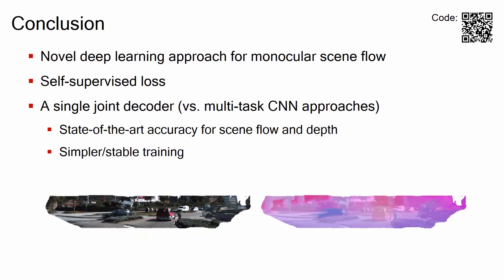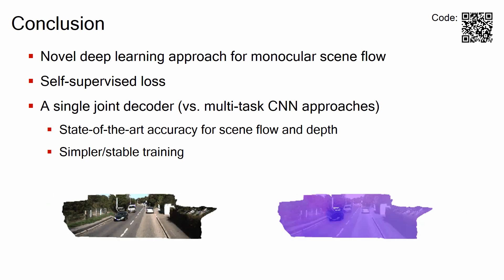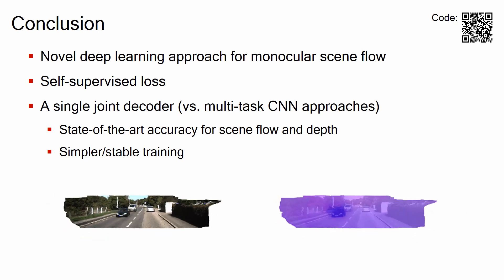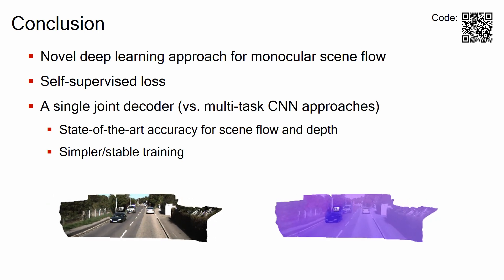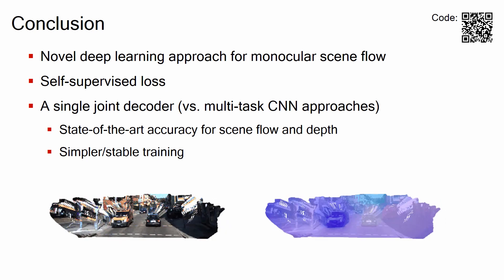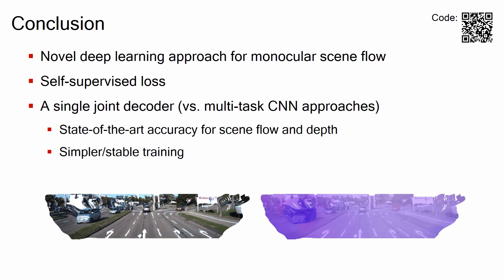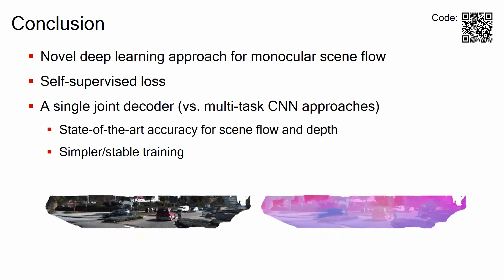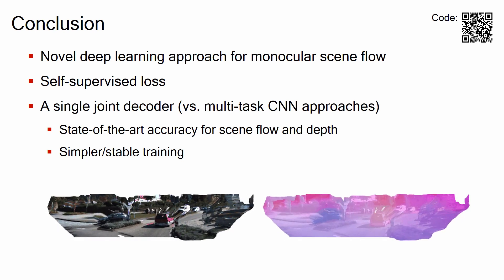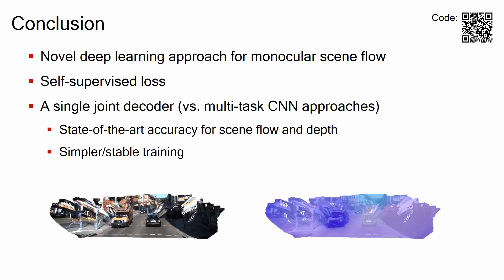In summary, we propose a novel approach for monocular scene flow. We take a self-supervised approach, proposing a novel 3D loss function with occlusion reasoning. Especially, comparing to existing multi-task approaches, our single joint decoder model substantially boosts accuracy with simpler and stable training. Our code is publicly available.